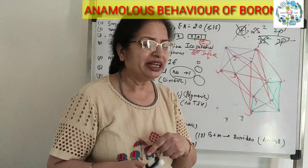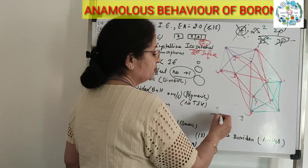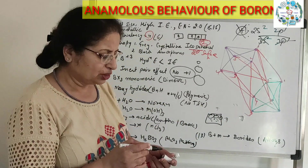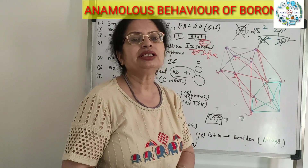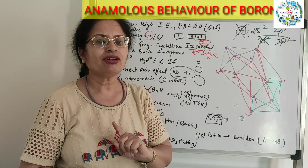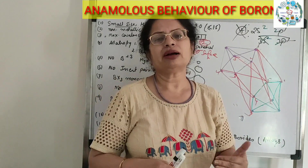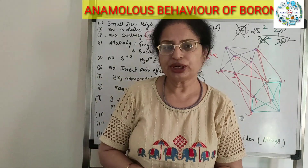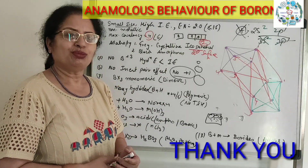Because boron is a non-metal, it reacts with metals to form borides. You can make two types of borides: ionic borides or interstitial borides, where boron is added in the interstitial spaces of the metal lattice, such as Fe₃B. Other elements like aluminum and gallium, being metals themselves, react with other metals to form alloys — a mixture of metals. But boron, being a non-metal reacting with a metal, forms compounds called borides. This was the anomalous behavior of boron. In the next video, we will discuss compounds of boron. Thank you.